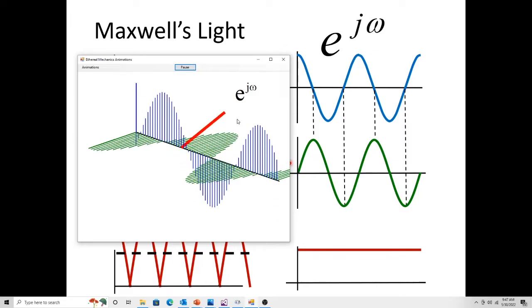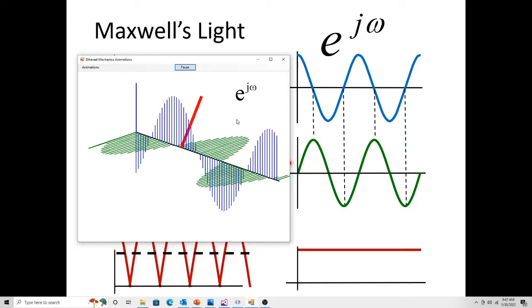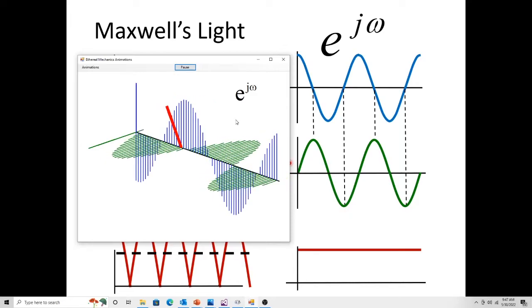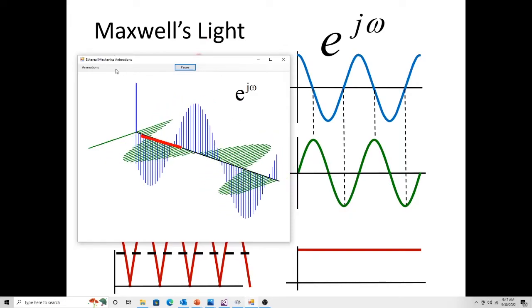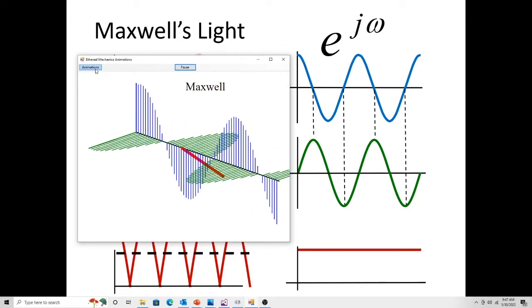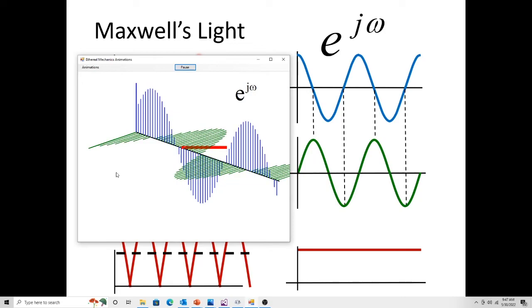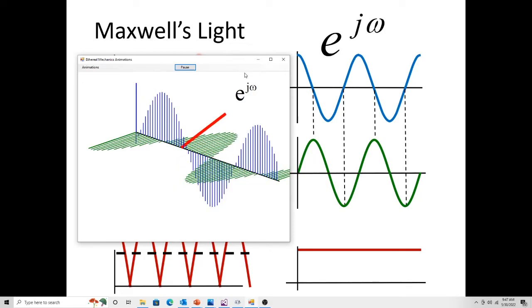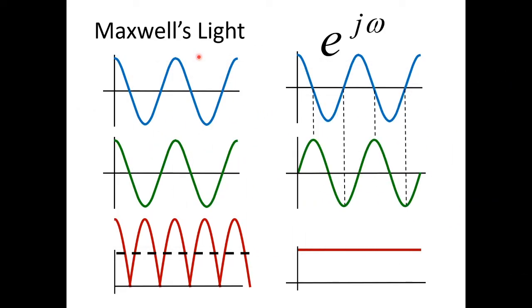This is e to the j omega. And this switch happened about a hundred years ago. Somewhere about a hundred years ago, engineers went from using this to using this.